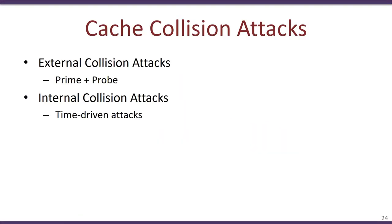There are two types of cache collision attacks: external cache collision attacks and internal cache collision attacks. External cache collision attacks are popularly known as prime and probe attacks, while internal collision attacks are known as time-driven attacks. In this lecture we will first look at the prime and probe attack and then the time-driven attack.